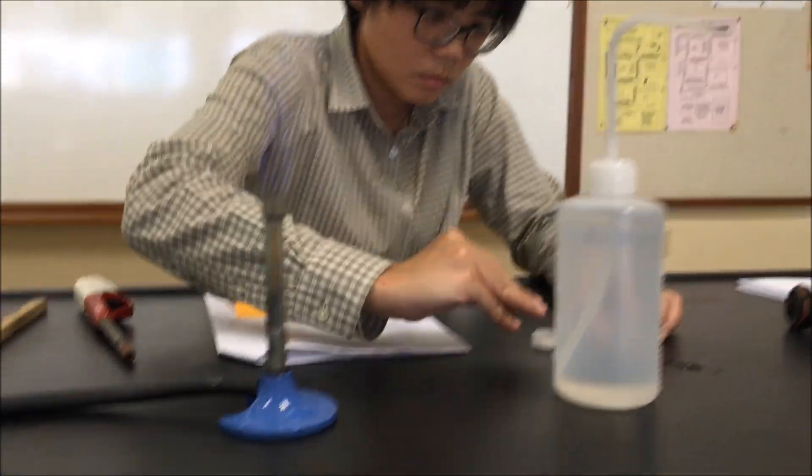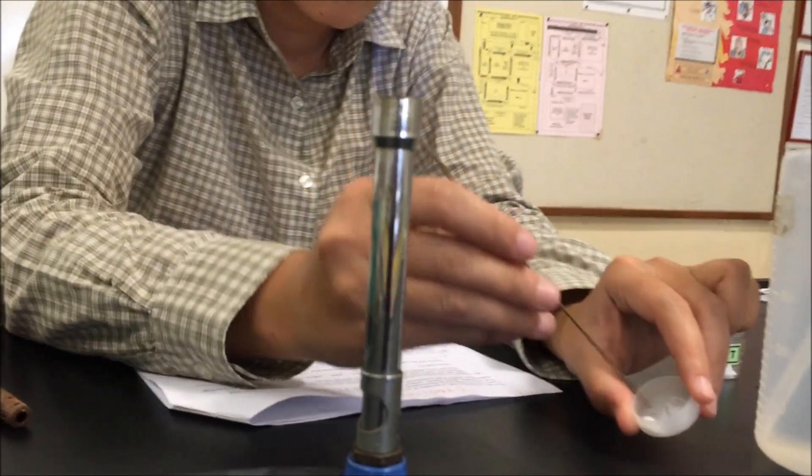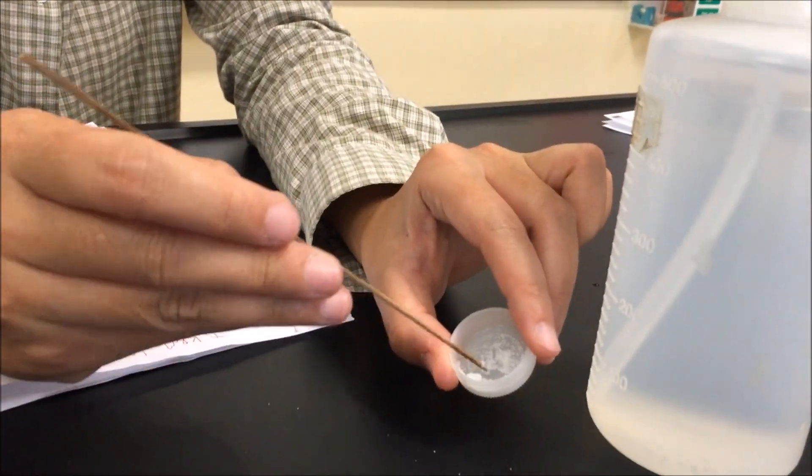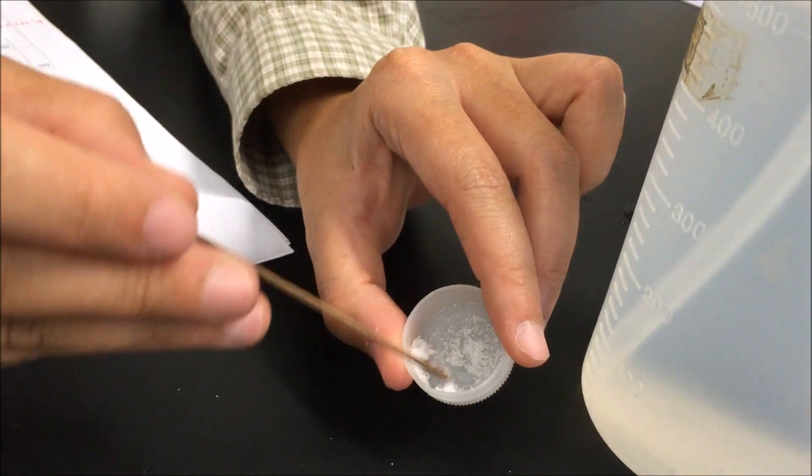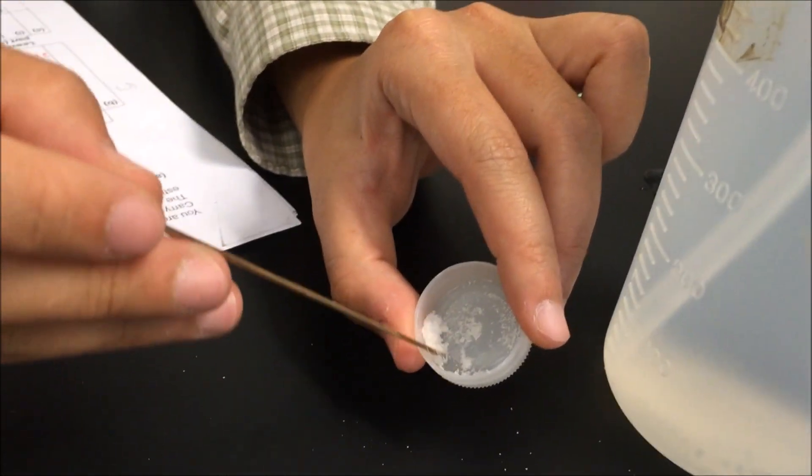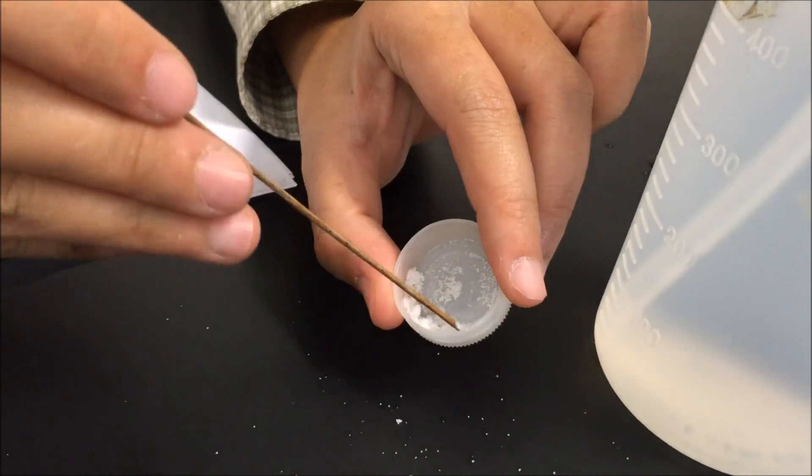So you wet the splint with distilled water, coat as much of the solid as you can on the splint, just as much as you can.